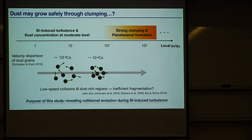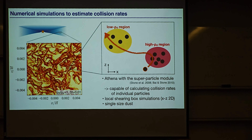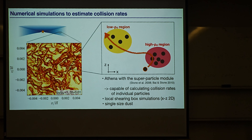As the first step, we conducted numerical simulations with a fixed dust size and measured the collision rate in the turbulence driven by streaming instability. We used Athena with a super-particle module, which enables us to track the trajectory of each dust particle. We measured collision rates for individual particles and averaged over all super particles.